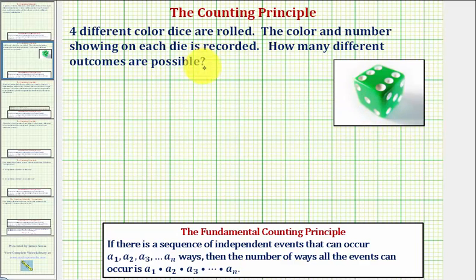We can determine the total number of possible outcomes to the situation by using the counting principle, where if there is a sequence of independent events that can occur a sub one, a sub two, a sub three and so on ways, then the number of ways all the events can occur is equal to the product of the number of ways of each independent event.